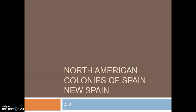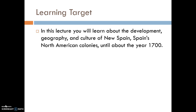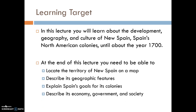In this lecture we're going to be looking at the North American colonies of Spain, which we're going to refer to as New Spain. Our learning target: you're going to learn about the development, geography, and culture of New Spain with Spain's North American colonies until about the year 1700. At the end of this lecture you need to be able to locate the territory of New Spain on a map, describe its geographic features, explain Spain's goals for its colonies, and describe its economy, government, and society.